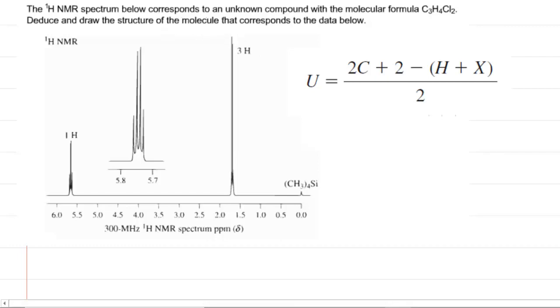In this question, we must come up with the structure of some unknown compound whose molecular formula is given here. Now any time a question gives you the molecular formula, the first thing you want to do is calculate the elements of unsaturation, symbolized here by the letter U.